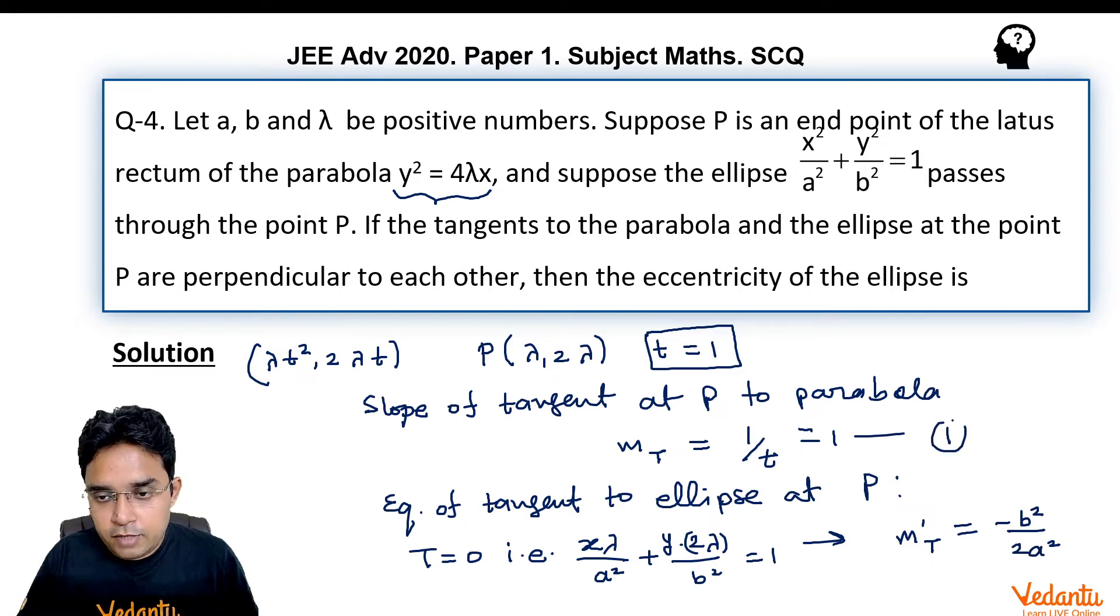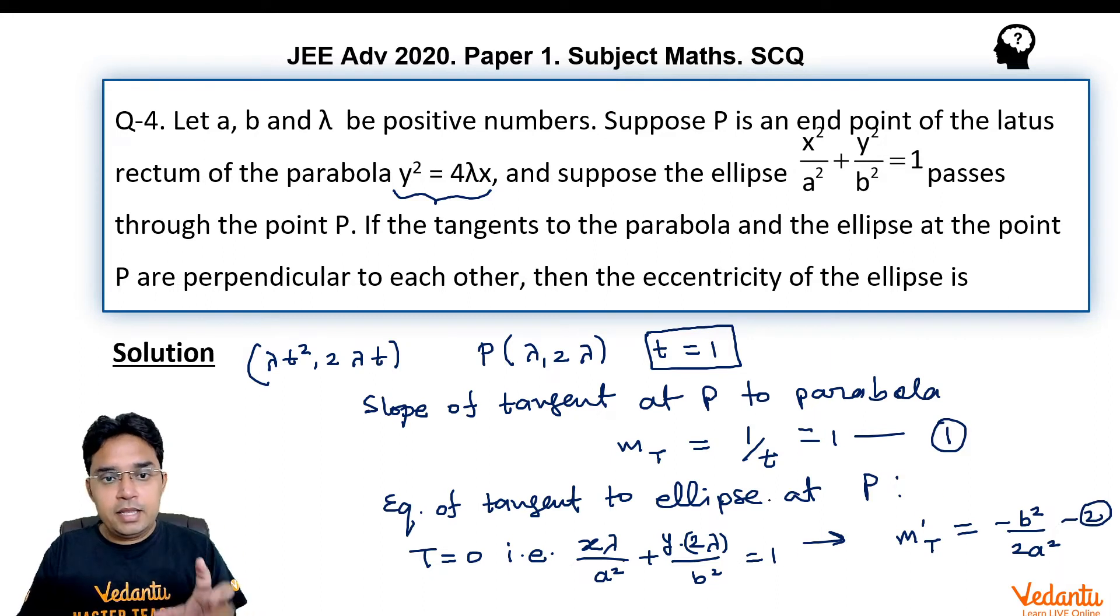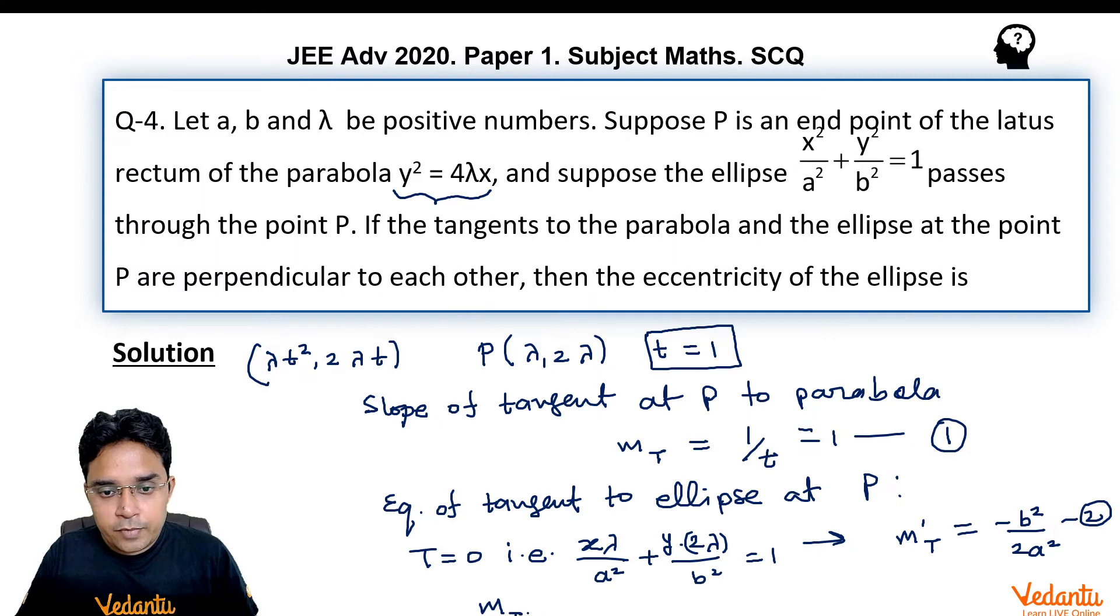Now, we have two slopes given by equation 1 and equation 2. As it is given they are perpendicular to each other. So, this m·m' product should be -1 and if you simplify it you get b²/a² = 2.